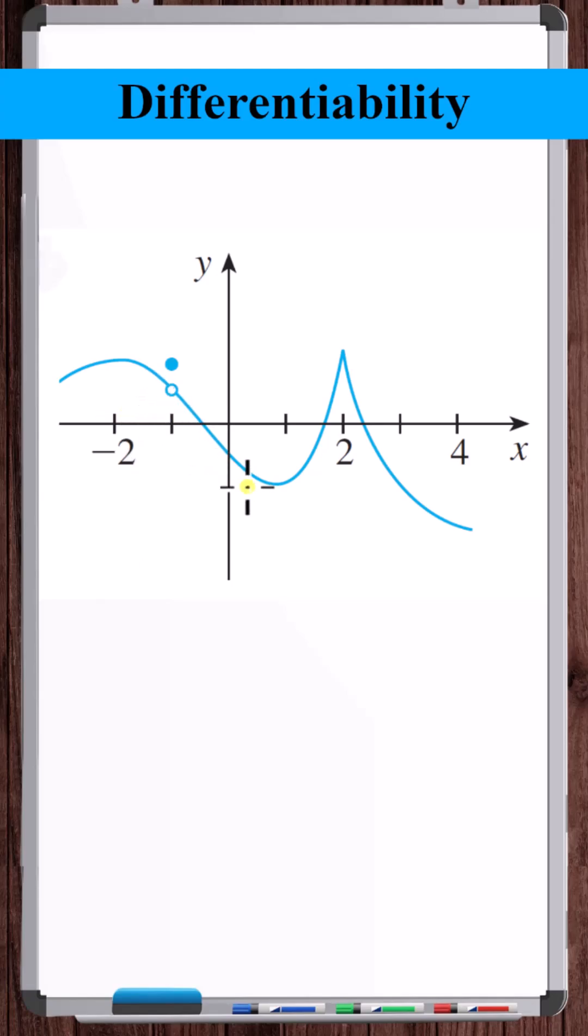Let's identify where this function is not differentiable. We have a smooth curve, no discontinuities, no kinks, until all of a sudden we get here.